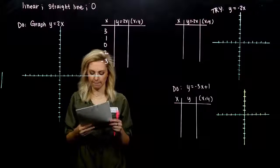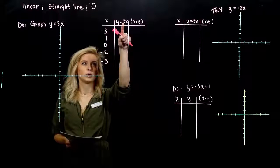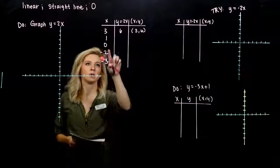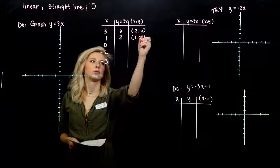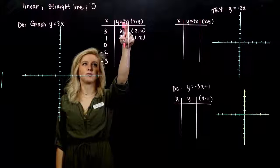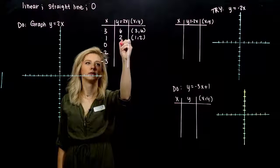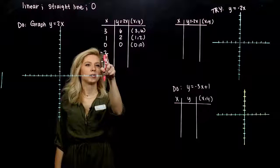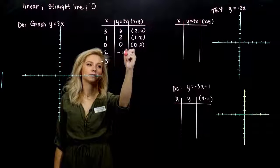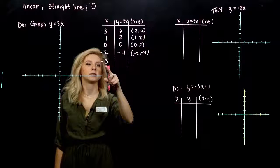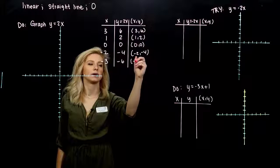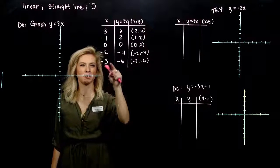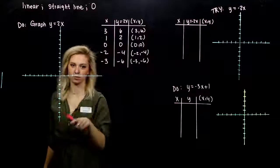Choosing the x values doesn't matter, but the y values that come out are not random — they're associated to each input. When I plug in 3 for x, I get 6 for y, so the line goes through (3, 6). When I plug in 1, I get 2, so it goes through (1, 2). When I plug in 0, I get 0, so it goes through the origin. Plugging in minus 2 gives minus 4, and minus 3 gives minus 6. You could plot more points or just 2, but more is more accurate when drawing by hand.